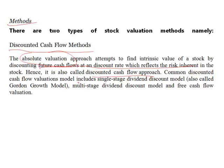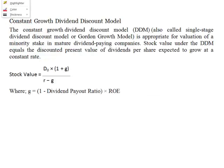The absolute valuation approach attempts to find the intrinsic value of a stock by discounting the future cash flows at a rate which reflects the risk inherent in the stock — hence it is also called the discounted cash flow approach. The common DCF valuation models include: the single-stage dividend growth model, also known as the Gordon Growth Model; the multi-stage dividend model; and free cash flow valuation.